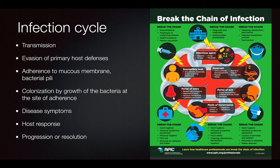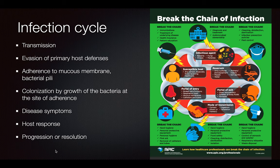So first, it's known as a chain. The infectious agent has to be transmitted, and it can be transmitted through a whole host of things — droplets, blood, and others. Importantly, it evades the primary host defenses. First, it has to enter the host, which can happen through cuts or adherence to the mucous membrane via bacterial pili. Then it's going to be colonized at the site of adherence. The body recognizes it and begins a host response once the disease symptoms appear — there's going to be inflammation and fever. Then there are two routes it can take: it can make the disease worse, or it can resolve.